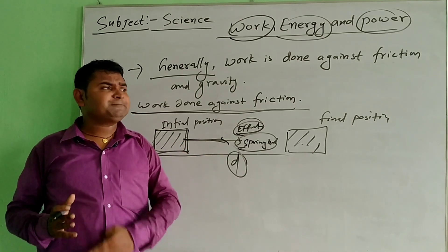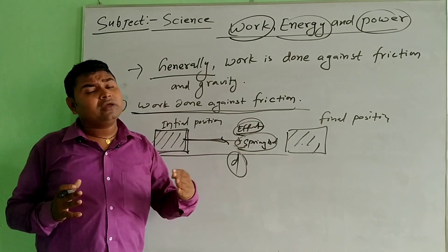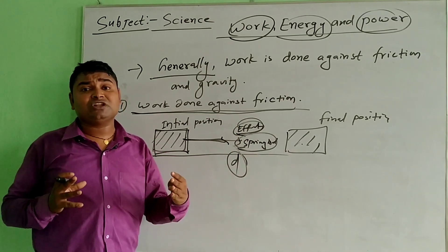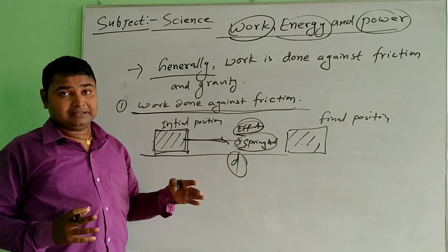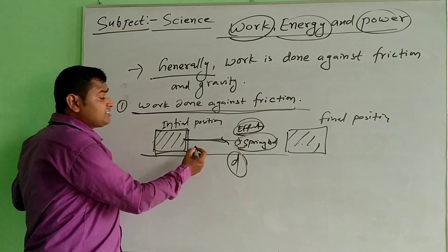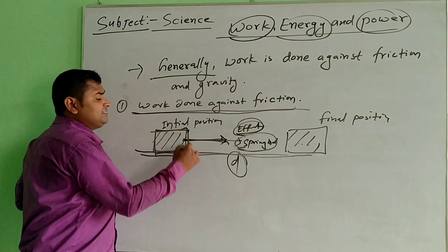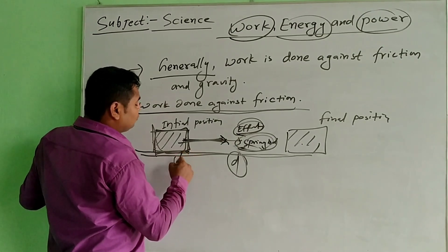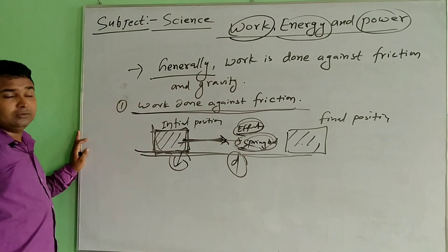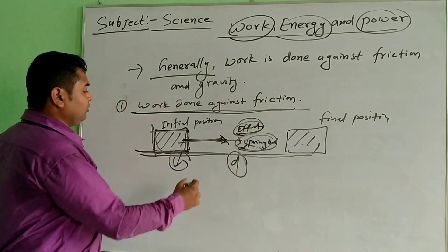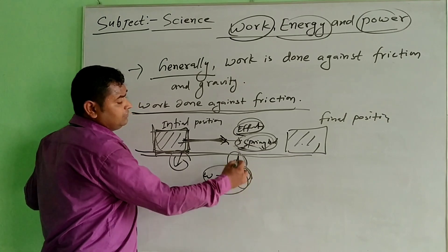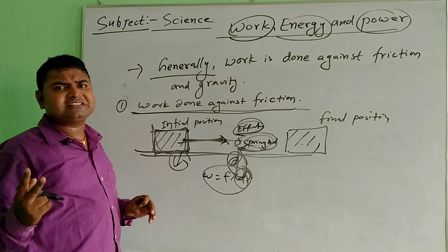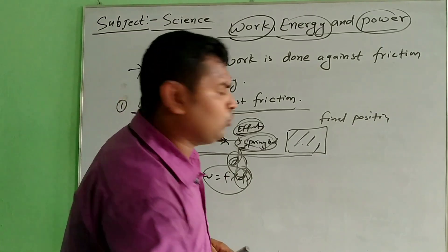Friction is the force which opposes the motion of the moving body. So for the box being pulled with a spring balance, the friction force acts against the motion. The work done against friction is W = F × D, where D is the displacement covered.